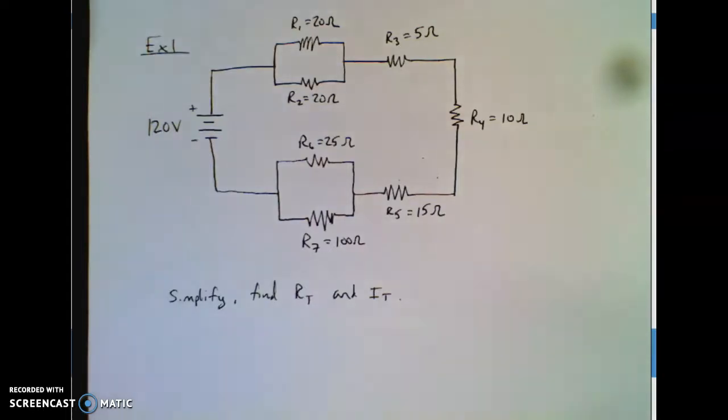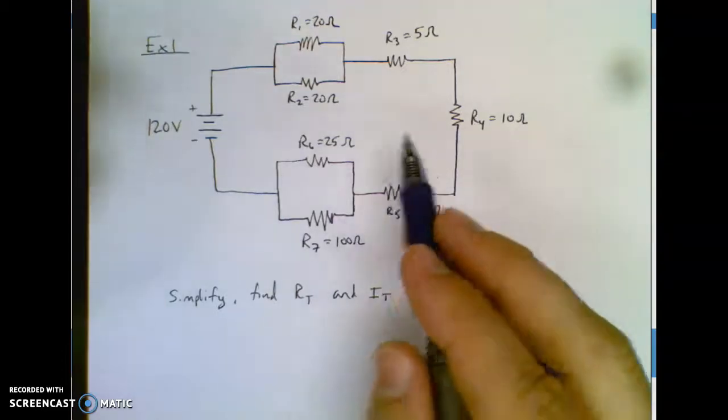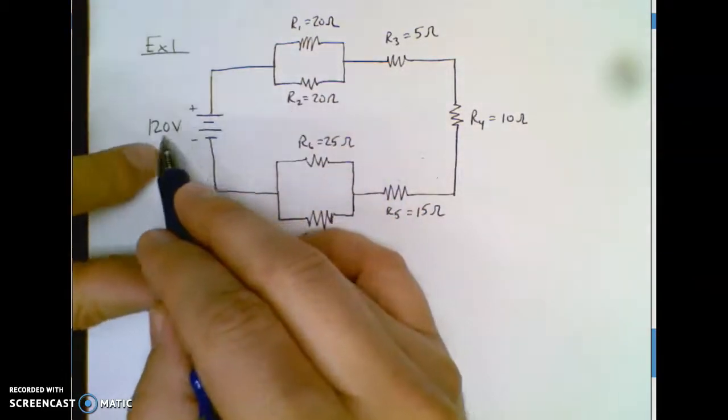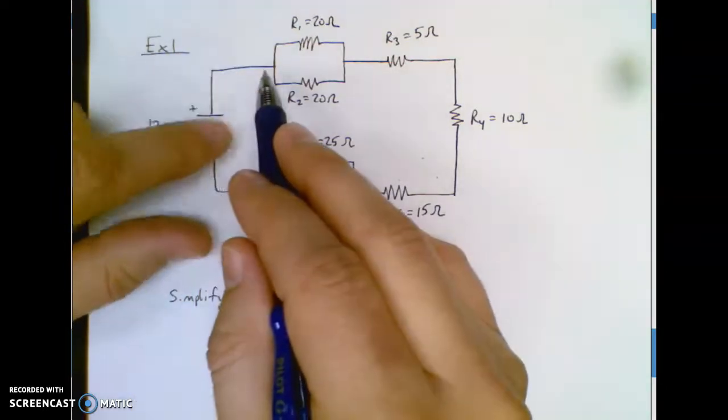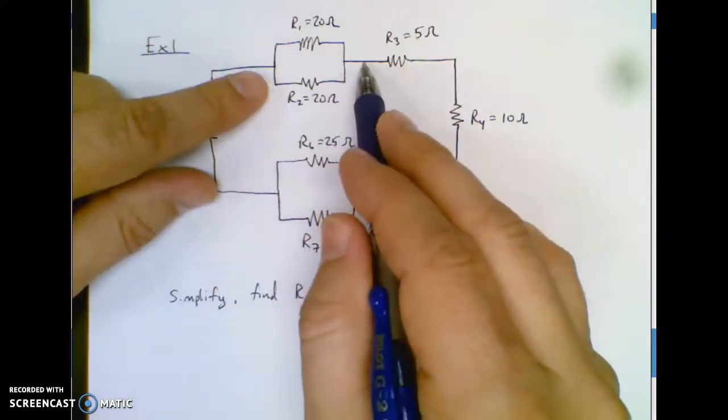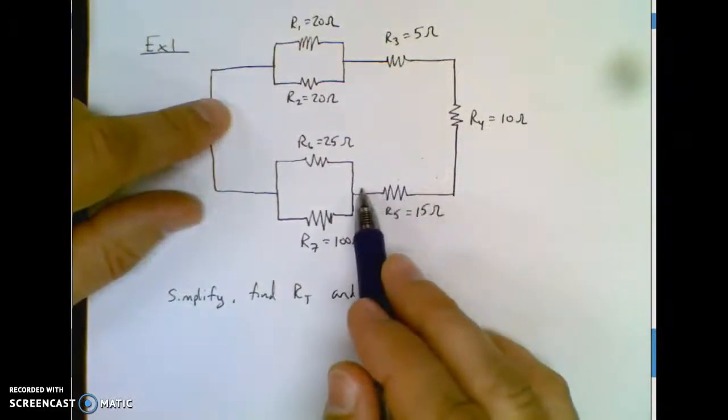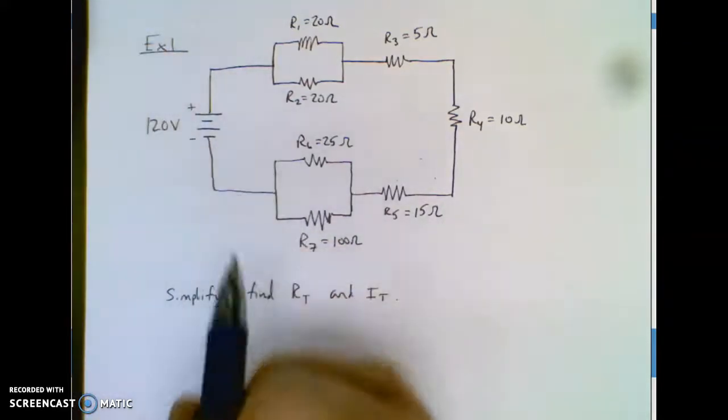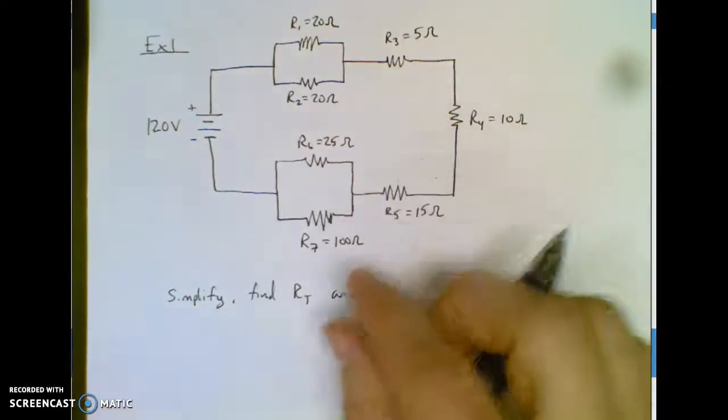Okay, so here's what we're doing. We have a 120 volt battery, that's our power source, and then it comes here and it starts to act like a parallel. We got two different branches, but then it jumps back into a series for a while. And then it splits and gives the electricity two routes to run on and it comes back. So you can see we have two parts that are parallel and other parts that are series.